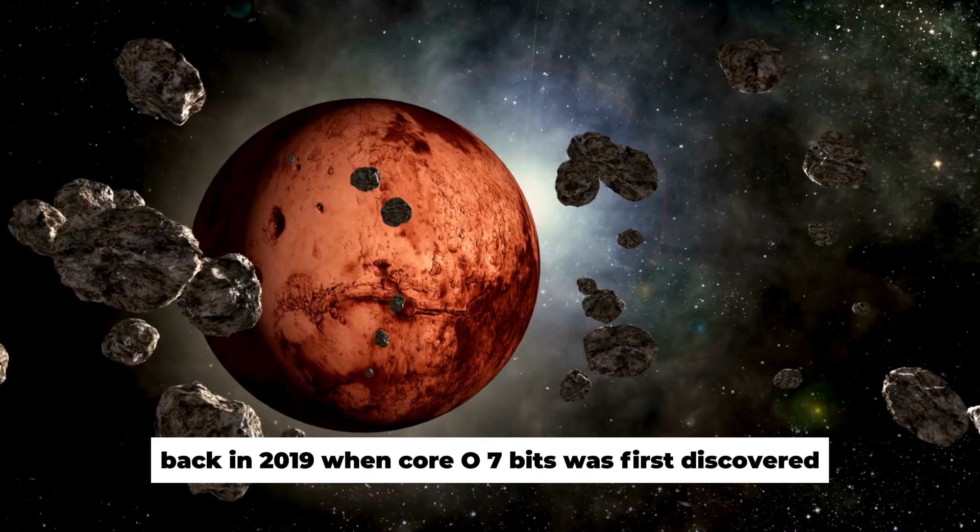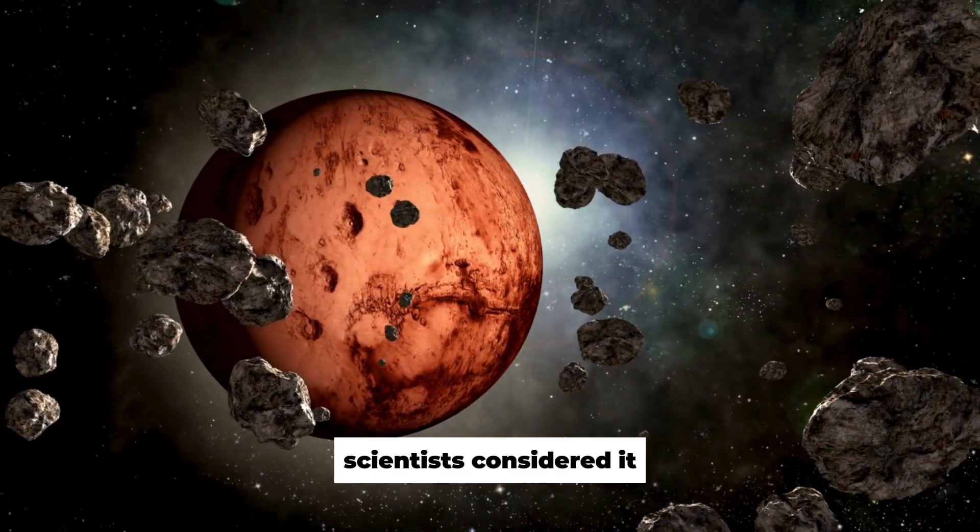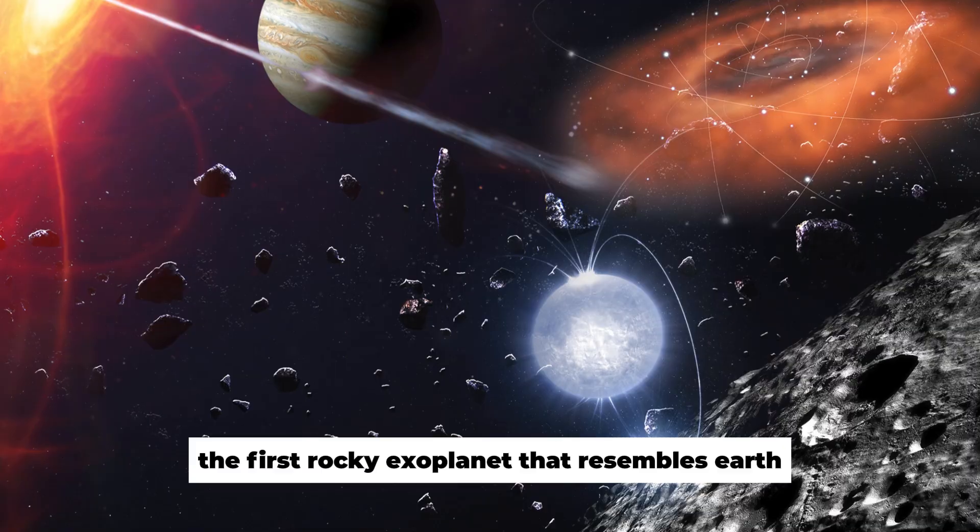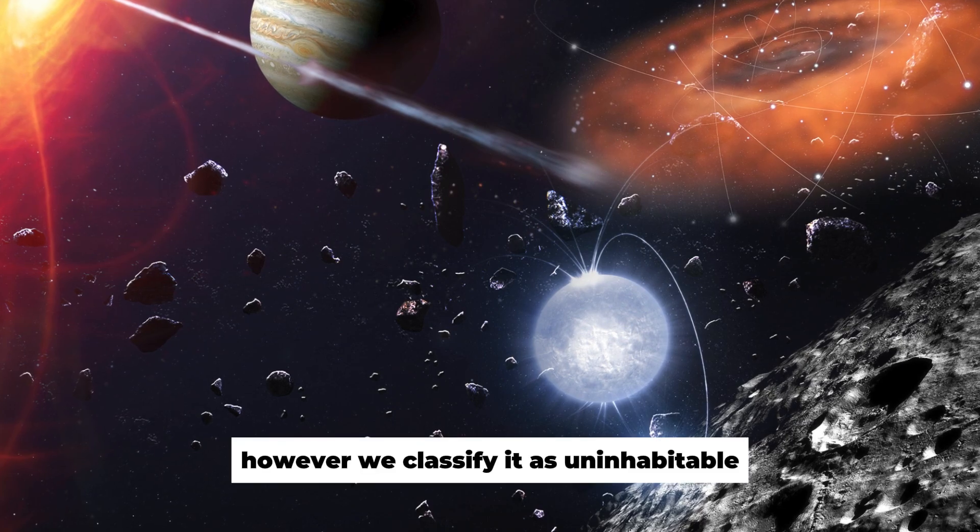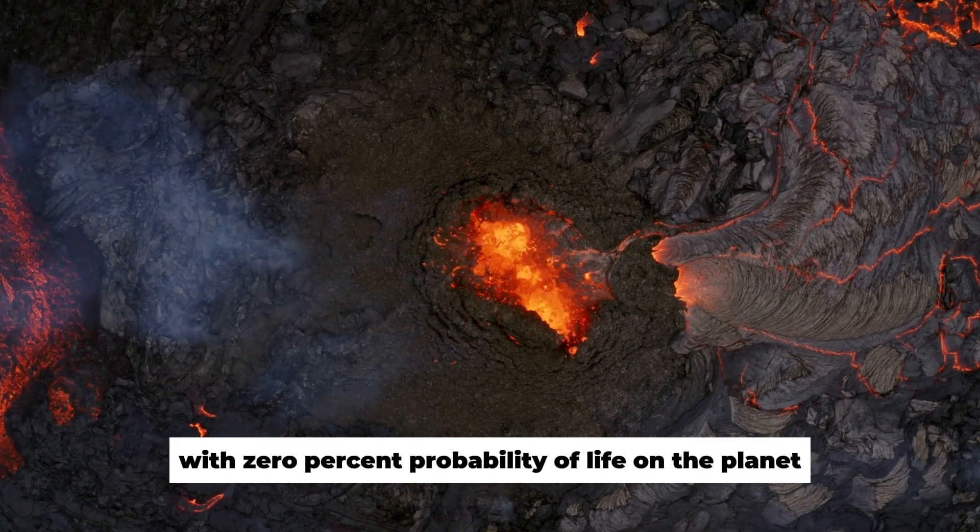Back in 2019, when Koro 7-B was first discovered, scientists considered it the first rocky exoplanet that resembles Earth. However, we classify it as uninhabitable, with 0% probability of life on the planet.